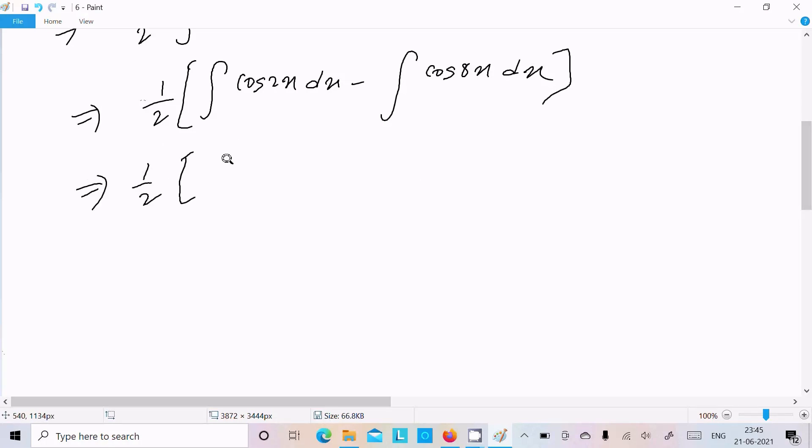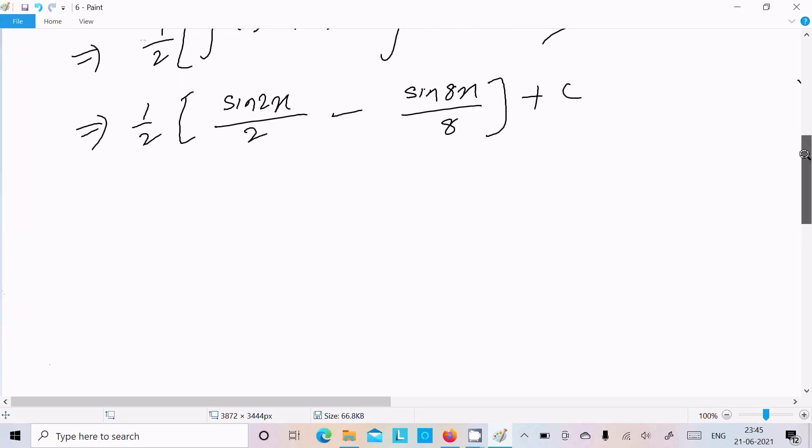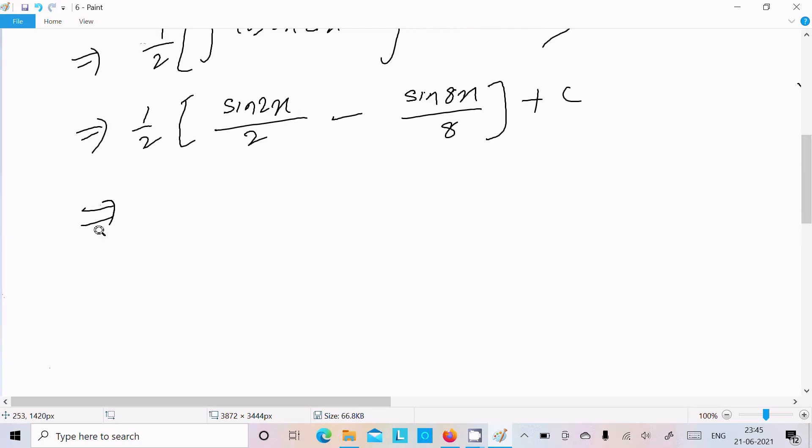Here, cos 2x integrates to sin 2x divided by 2. Next is minus cos 8x, which integrates to sin 8x divided by 8, plus C. We can write 1/4 sin 2x minus sin 8x divided by 16, plus C.